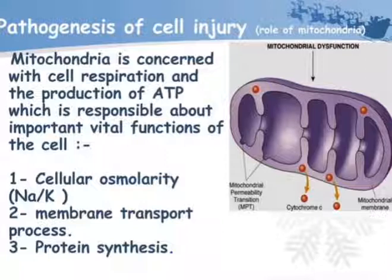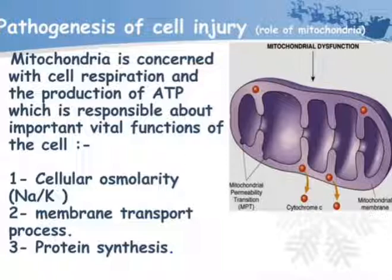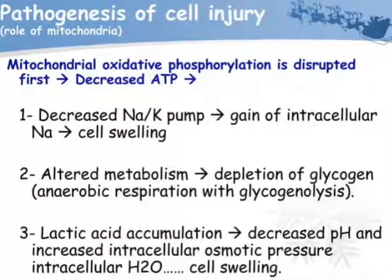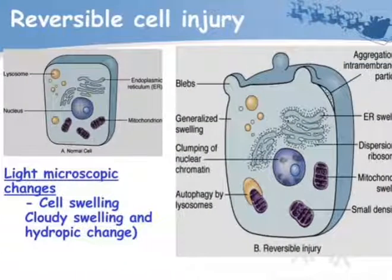Pathogenesis of cell injury: mitochondria are concerned with cell respiration and production of ATP, which is responsible for vital cell functions such as cellular osmolarity — sodium and potassium — membrane transport, and protein synthesis. Mitochondrial oxidative phosphorylation is disrupted first, leading to decreased ATP. Decreased sodium-potassium pump activity leads to gain of intracellular sodium, causing cell swelling. In anaerobic metabolism, depletion of glycogen and anaerobic glycogenolysis occur, producing lactic acid, which decreases pH and increases intracellular osmotic pressure, resulting in intracellular water accumulation and cell swelling.